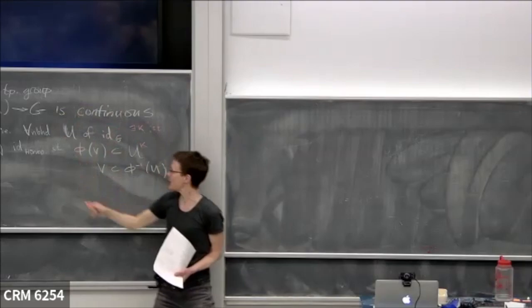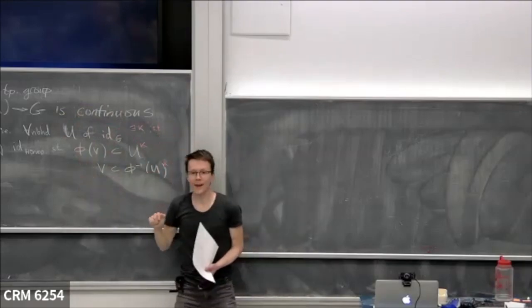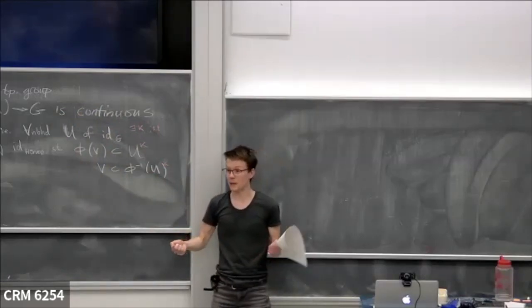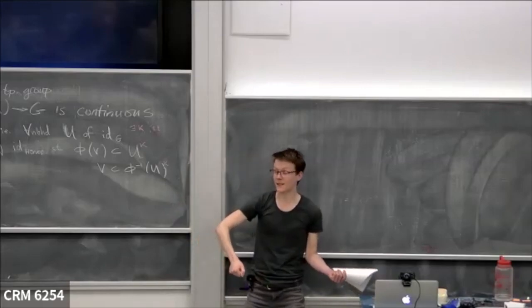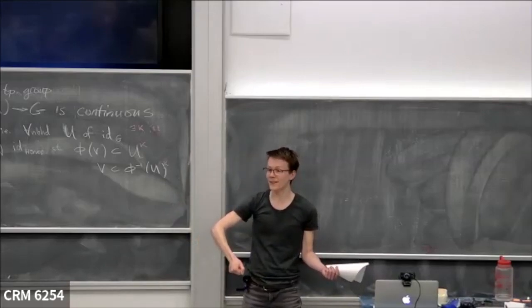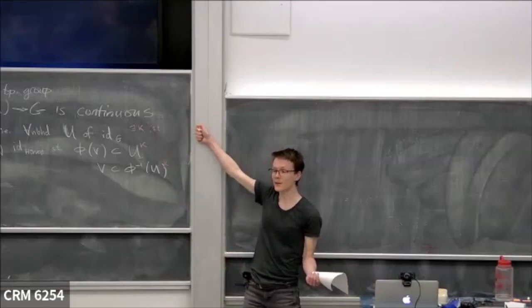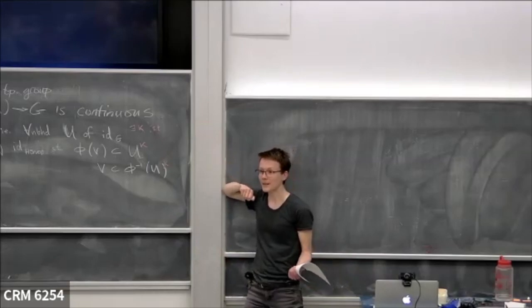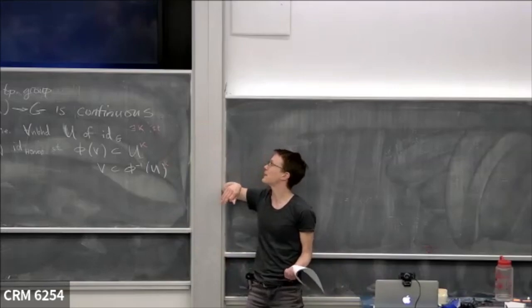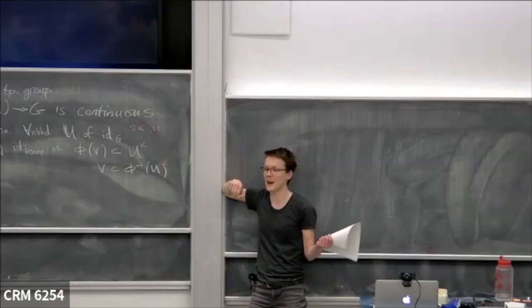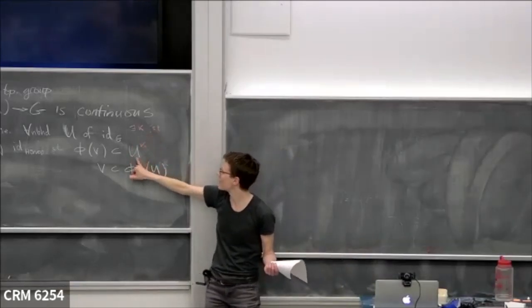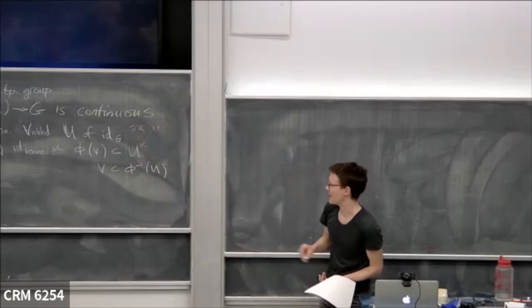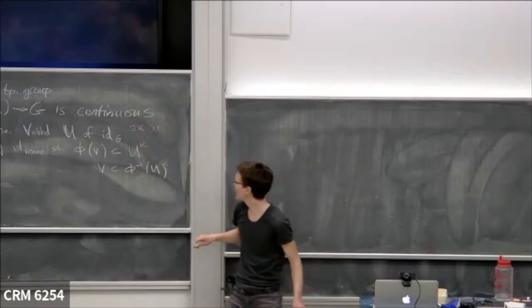The Birkhoff-Kakutani metrization theorem tells you that for a topological group, being first countable, being metrizable, and having a left-invariant metric that generates the topology are all equivalent. Since G has a countable dense set, it should also have a countable basis. In the intended applications G will always be some nice metrizable group, so psychologically you should pretend you have a metric.